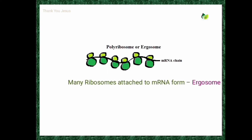A polyribosome or ergosome is formed when many ribosomes are attached to a single mRNA molecule. In prokaryotes, during protein synthesis, several ribosomes attach to mRNA and form a structure called a polyribosome or ergosome. If the ribosome occurs singly, it is called a monosome.